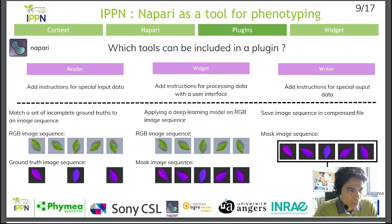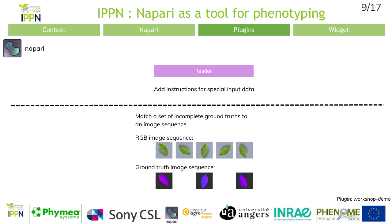For the Reader, a user may have data with a very specific structure. To make this data processable in Napari, the Reader offers the user the option of writing a script. For example, suppose you have a set of RGB images with an incomplete mask dataset. When you input them into Napari, you want each RGB image and mask to match. To do this, you need to write a script in the Reader method that matches the RGB image with its mask.